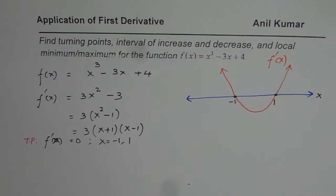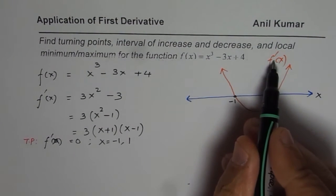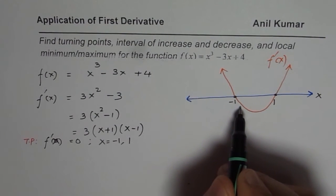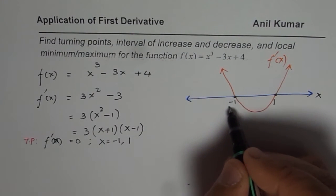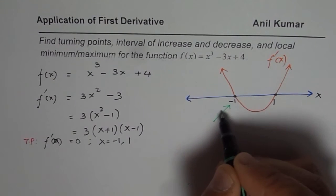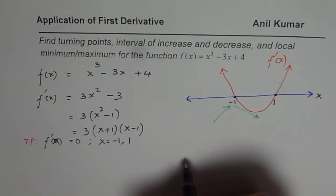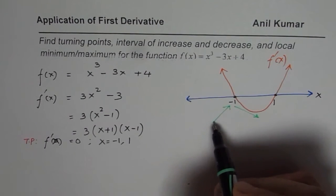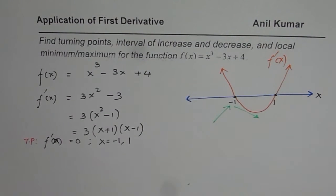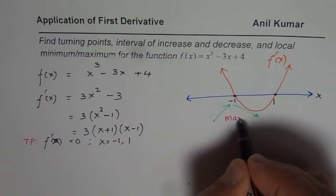On the left side of -1 the derivative is positive, and on the right side the derivative is negative for the given function. That means the slope of the tangent line is increasing on the left side of -1 and it is decreasing on the right side of -1. Whenever the derivative is positive, the function is increasing. So when the slope changes from increasing to decreasing, it signifies a maximum — so this is your maximum.